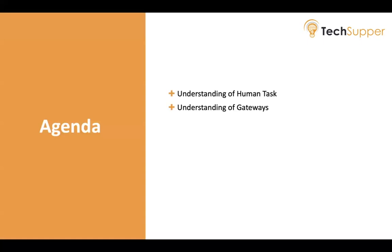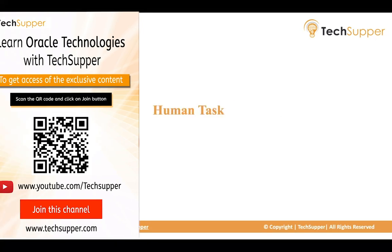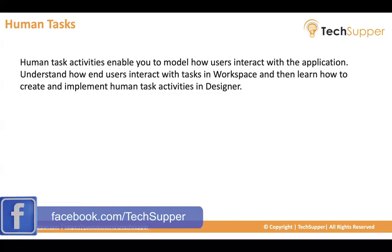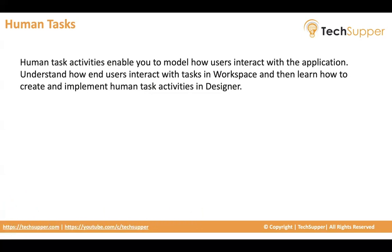We are going to understand human tasks and gateways. A human task activity enables you to model how users interact with the application. For example, as an initiator you initiate a request, and that request gets assigned to a human — that is called a task. To assign that task you have to use human task activities, so you understand how the end user interacts with the task in the workspace at runtime, for example to approve or reject.